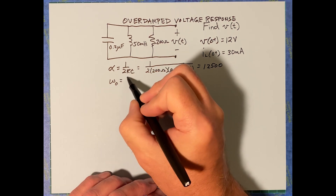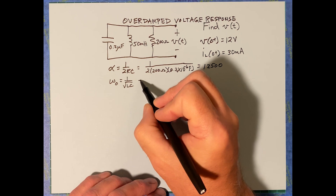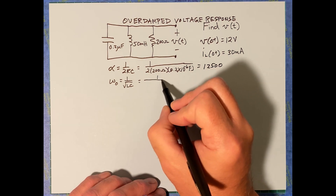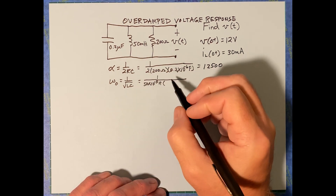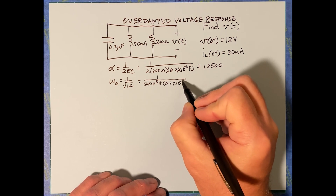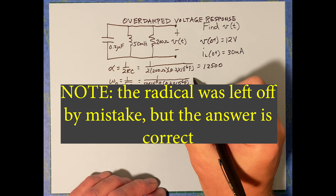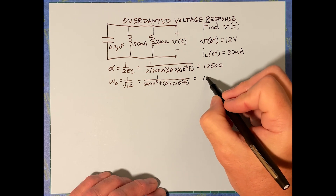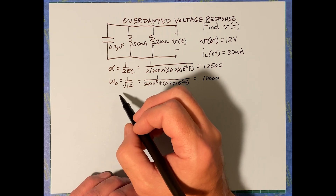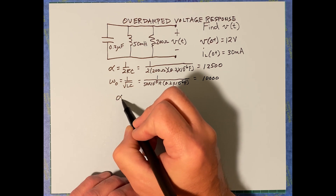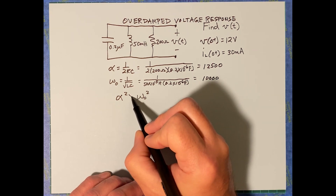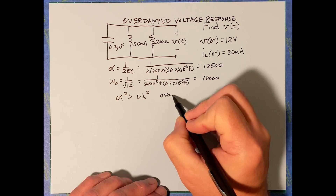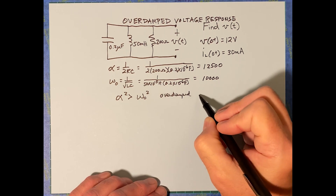Now let's compute omega-naught. Omega-naught is one over the square root of LC, which is one over the square root of 50 times 10 to the negative three henries times 0.2 times 10 to the negative six farads, and that equals 10,000. Since alpha squared is greater than omega-naught squared, this is the overdamped case.